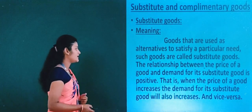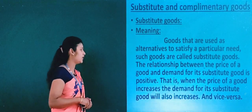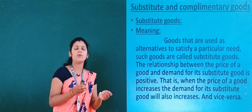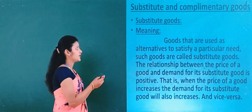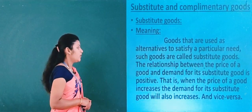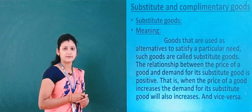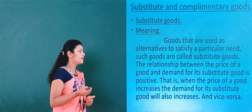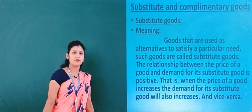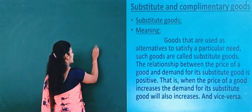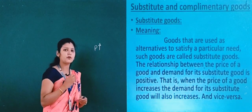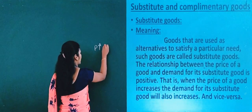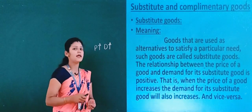The relationship between the price of a good and demand for its substitute good is positive. That is, when the price of a good increases, the demand for its substitute good will also increase. Listen carefully: if the price of one good increases, then the demand for its substitute good will increase.